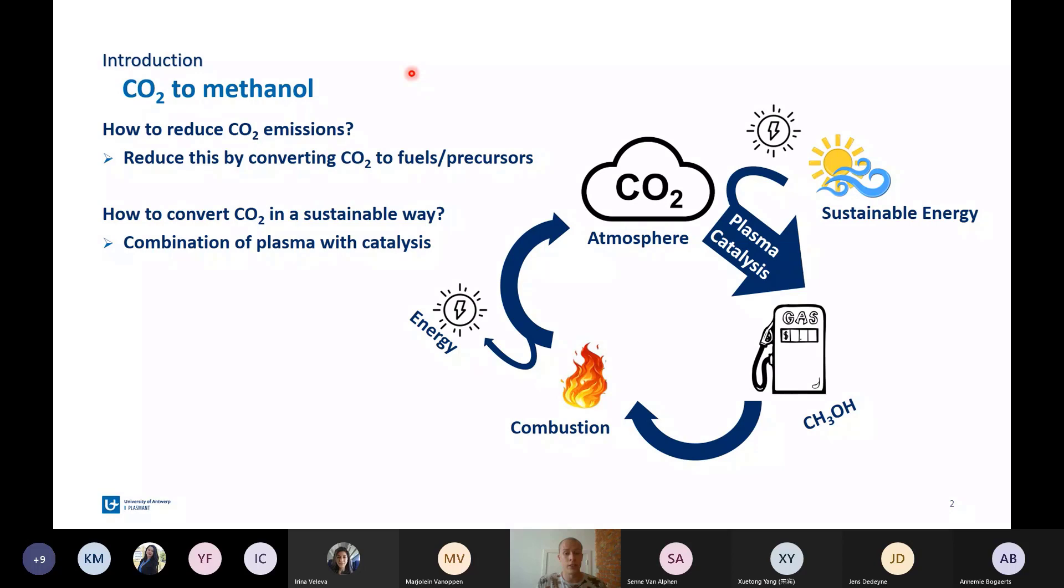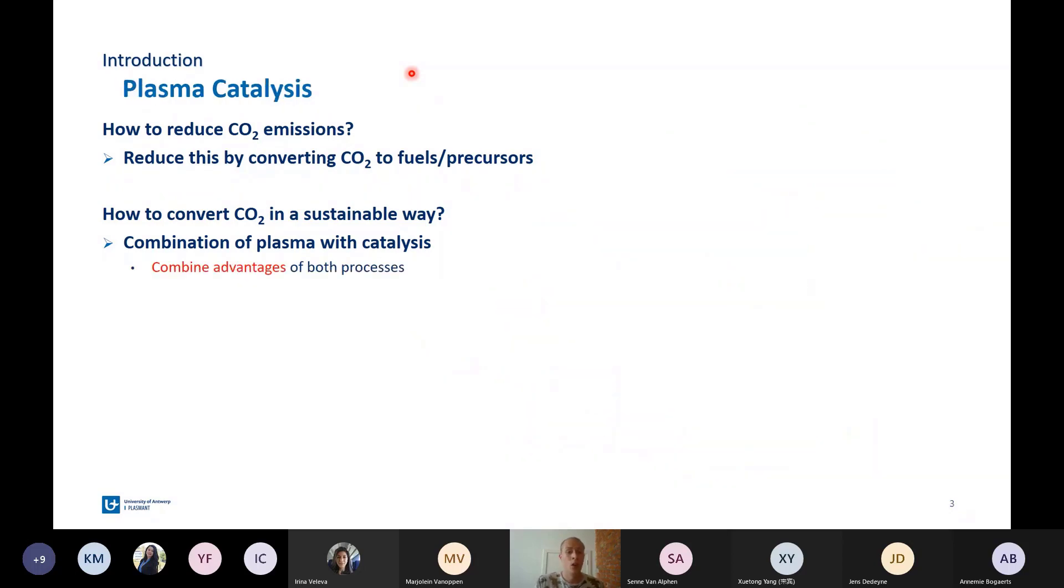There are several reasons why plasma catalysis is an interesting way to convert CO2 back into methanol or other fuels. First of all, it combines the advantages of both plasma conversion and catalytic conversion. For plasma conversion, the advantages are that it is very energy efficient. A plasma is also easy to use in combination with renewable energy, because a plasma can be easily switched on and switched off, which makes it easy to deal with the intermittency of renewable energy sources. Furthermore, a plasma can operate at atmospheric conditions, which is also energy efficient, but a plasma is not very selective, and in the case of CO2 hydrogenation plasma, it's mostly selective towards carbon monoxide, which is not as interesting as methanol.